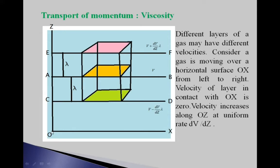The layer in contact with the OX horizontal surface has zero velocity, and as we go along OZ, the velocity of layers increases. The CD layer has less velocity than the AB layer, and the EF layer has greater velocity than AB. The EF and AB layers are separated by distance lambda, as are AB and CD — where lambda is the mean free path. The velocity of AB layer is V, of EF layer is V plus (dU/dZ)·λ, and of CD layer is V minus (dU/dZ)·λ.